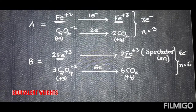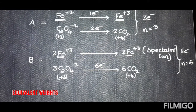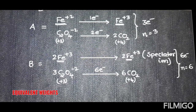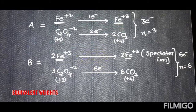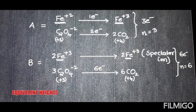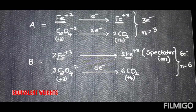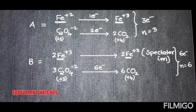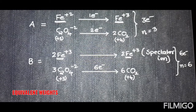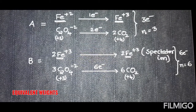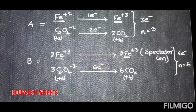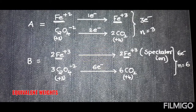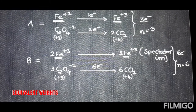To summarize this key point: in ferrous oxalate, both the cation and anion parts undergo oxidation. In such cases, you add all the electrons from the cation and the anion to calculate the n-factor. I am repeating: if in a given molecule both the cationic part and the anionic part undergo oxidation, then the number of electrons from the cation and from the anion are added together for the n-factor calculation.